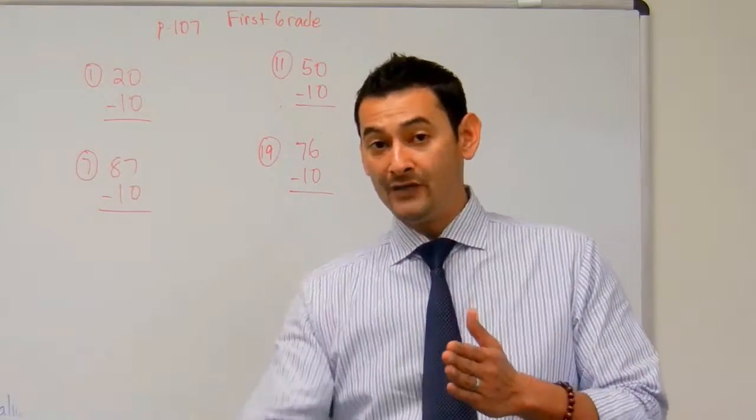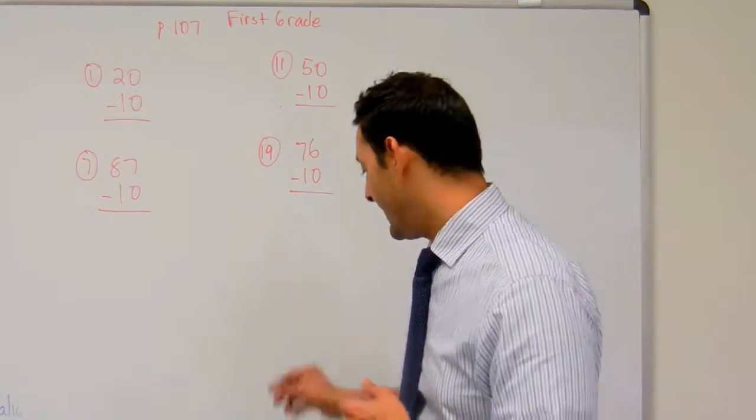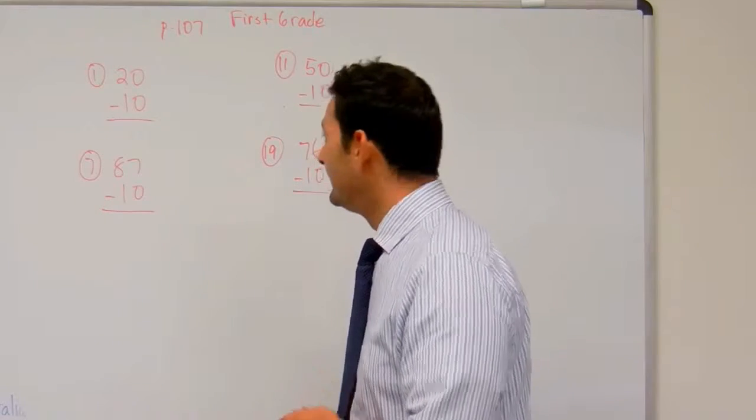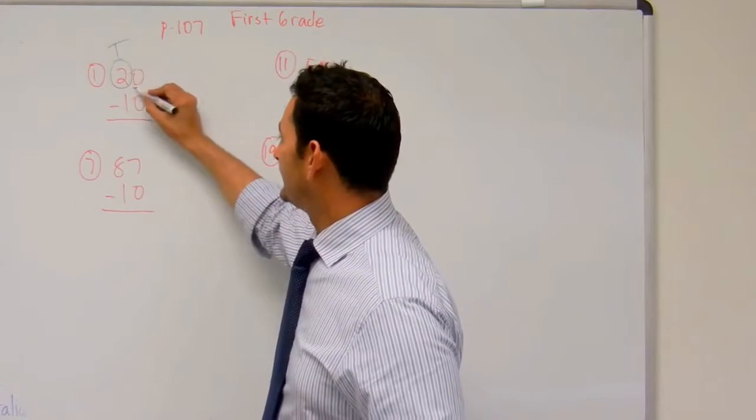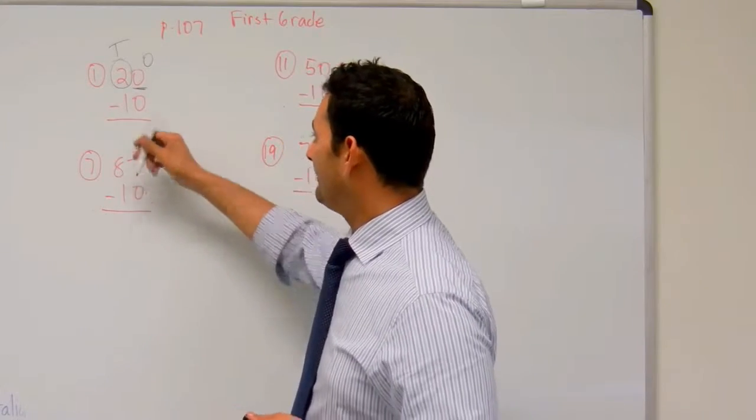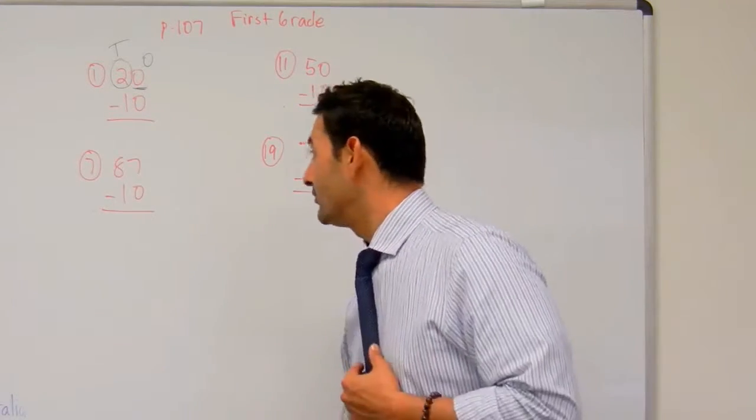But instead of going up, we're going to go down. Instead of going up when we're adding, we're going to go down. And remember, we need to focus on the tens place. The ones place digit is going to stay the same. But the ones place is going to change. And here we're subtracting by ten, so we're going to go down.